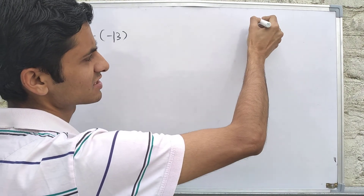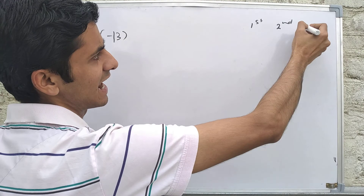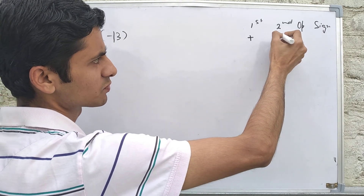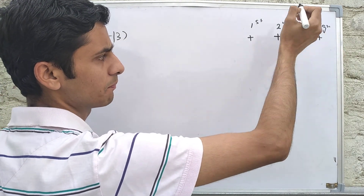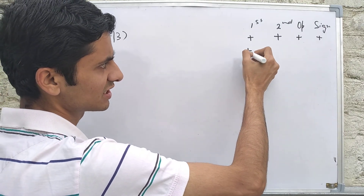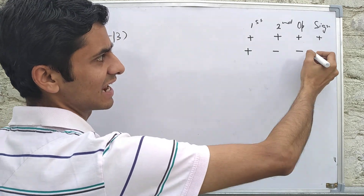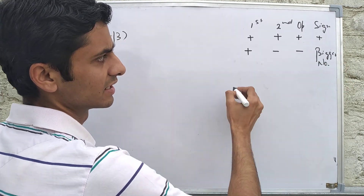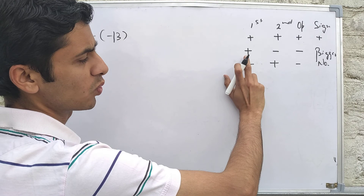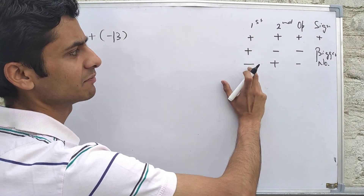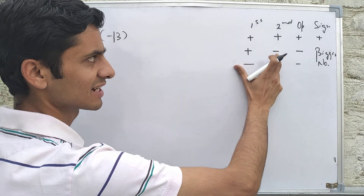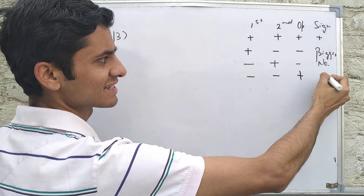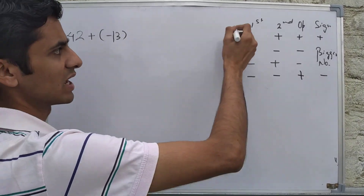For this, you have to learn one table. First number, second number, operation, and sign. If both numbers are positive, you add and the sign is positive. If one number is positive and another is negative, you subtract and the sign is of the bigger number. If both numbers are negative, you add and the sign is negative.